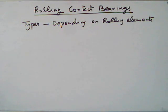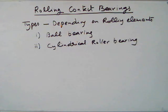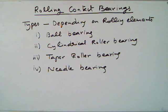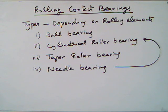Types of rolling contact bearings depending on rolling elements. First one is ball bearing. Second one is cylindrical roller bearing. Third one is taper roller bearing. Fourth one is needle bearing. Needle bearing is just similar to cylindrical roller bearing — the only difference is the diameter of the roller is very, very small.